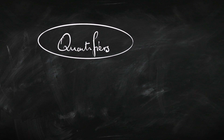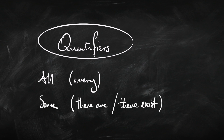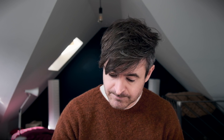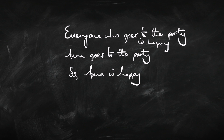Let me briefly introduce the quantifiers. We're going to focus on two: 'all' or 'every' — meaning the same thing — and 'some,' which we can also express as 'there are' or 'there exist.' We're going to use a symbol for each: for 'all,' we use an upside-down A; and for 'some,' a backwards E for 'there exists.' So let's think back to the argument: everyone who goes to the party is happy; Anna goes to the party; so Anna is happy.